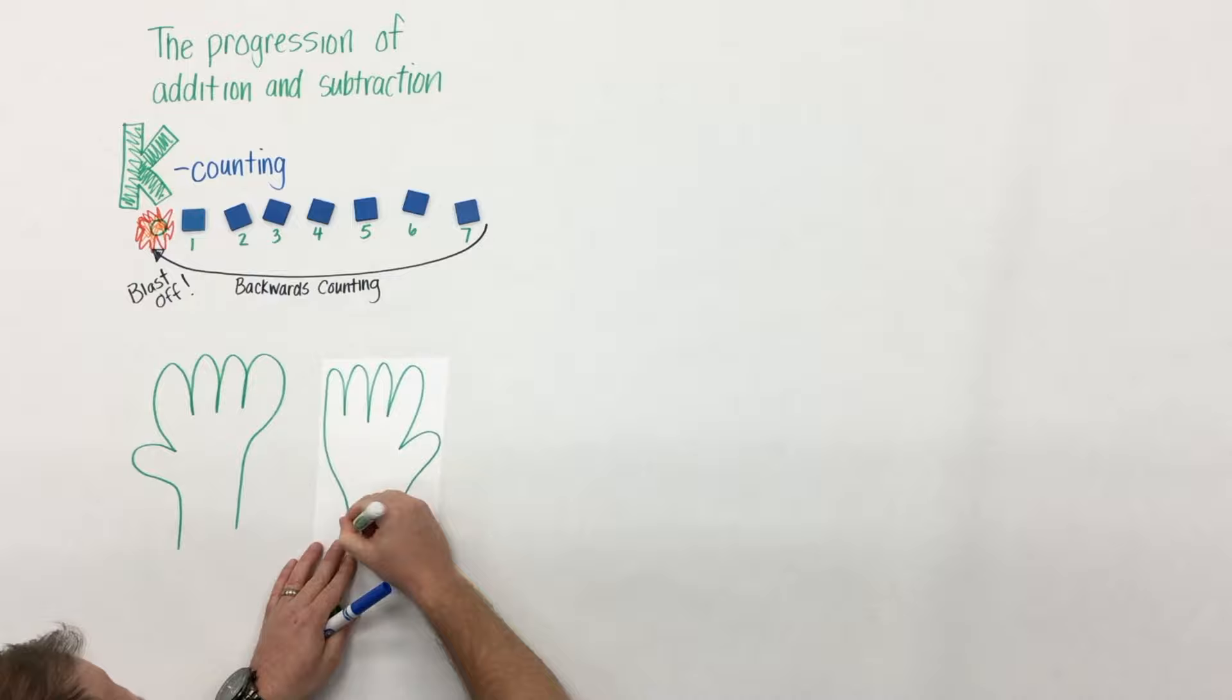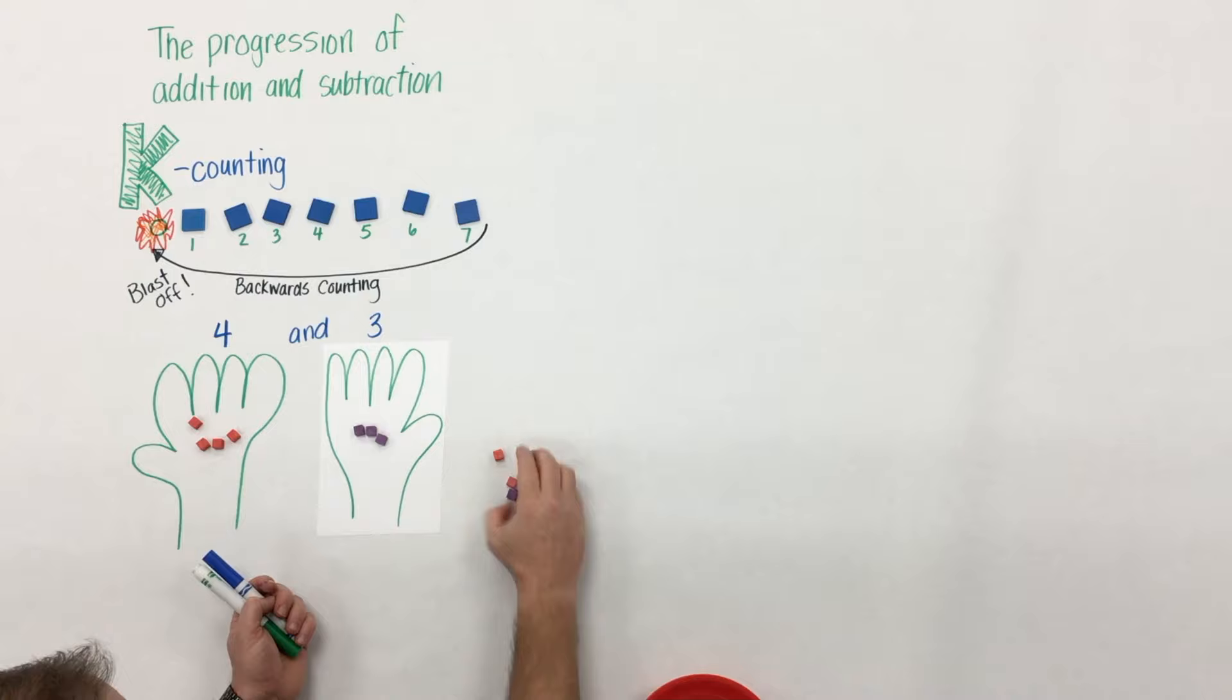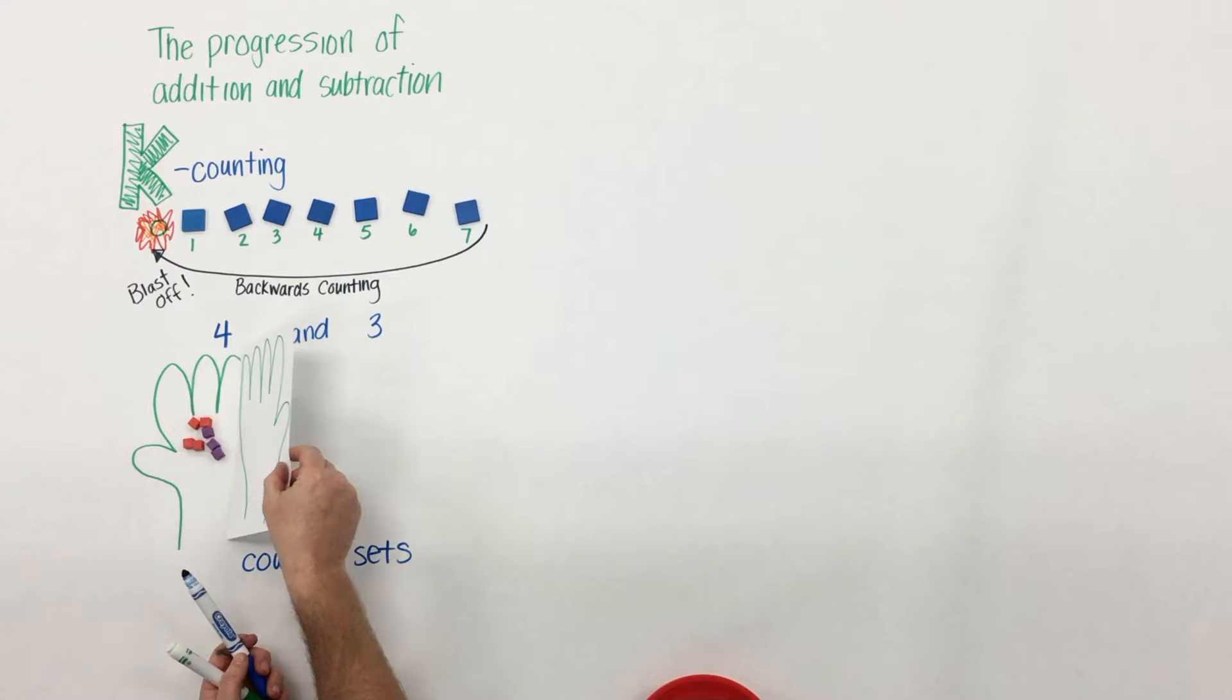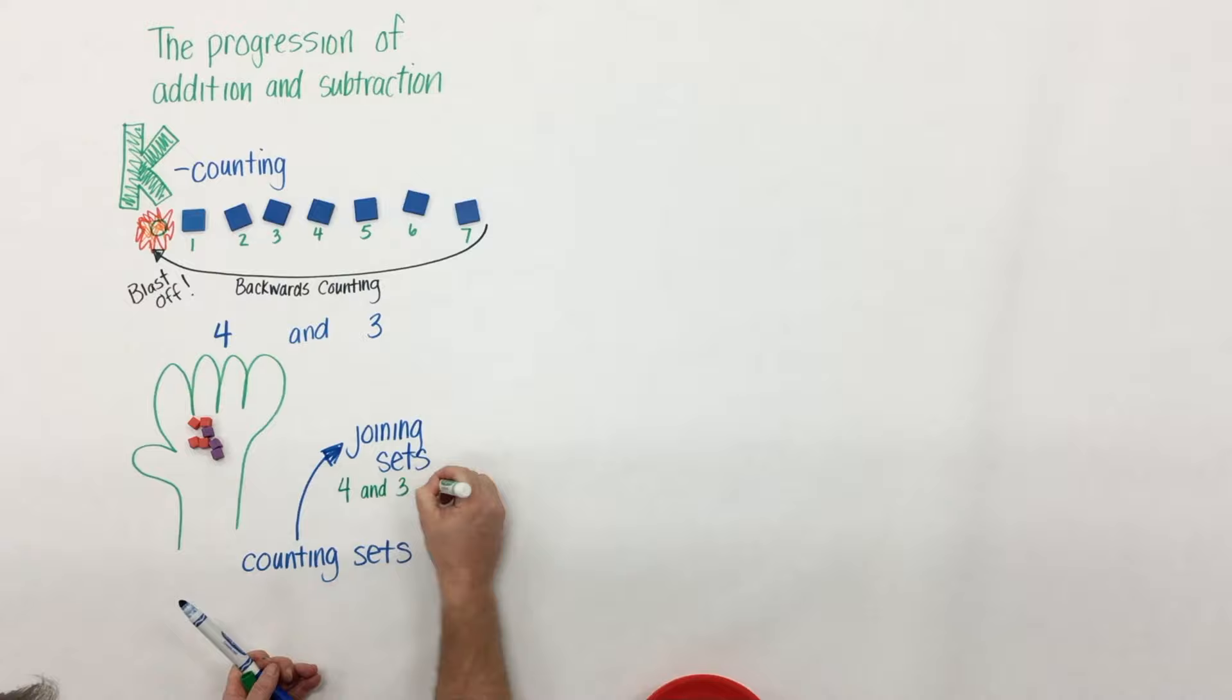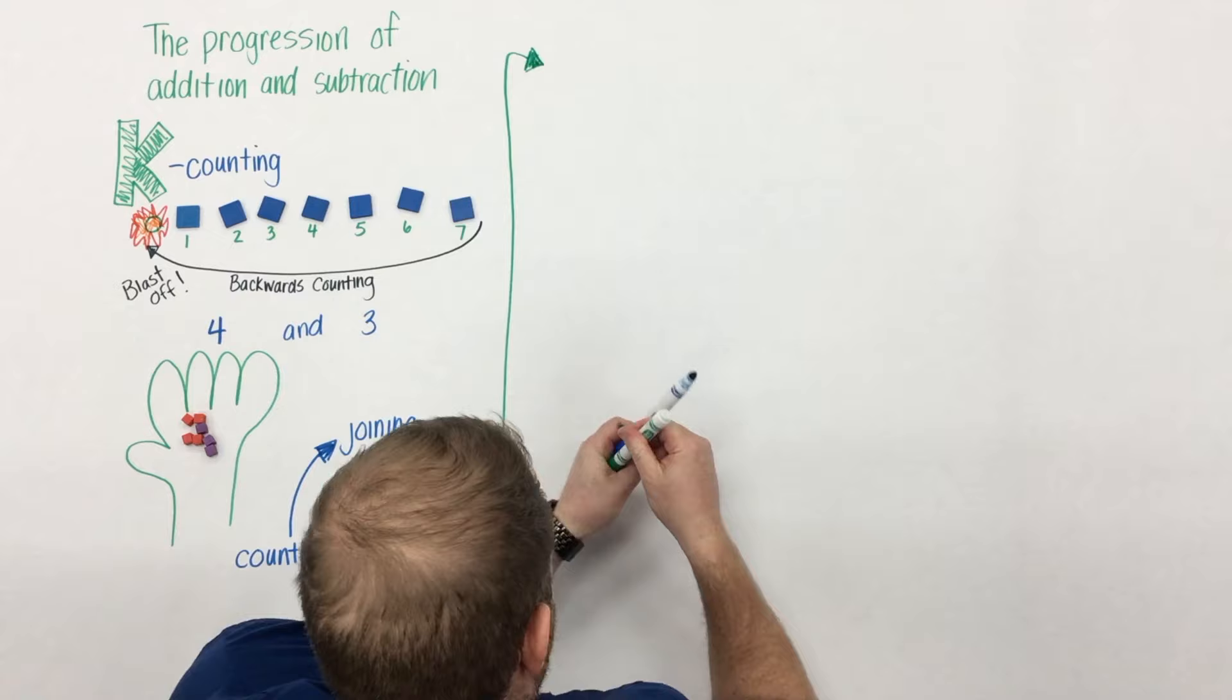As students work on counting they begin to count sets. So here a student will have four in one hand, three in another hand, and they're not able to put those two sets together. They'll always be a set of four and a set of three. Then as students move from counting sets to joining sets they're able to combine the four and three. So four and three more is seven or four plus three is seven.